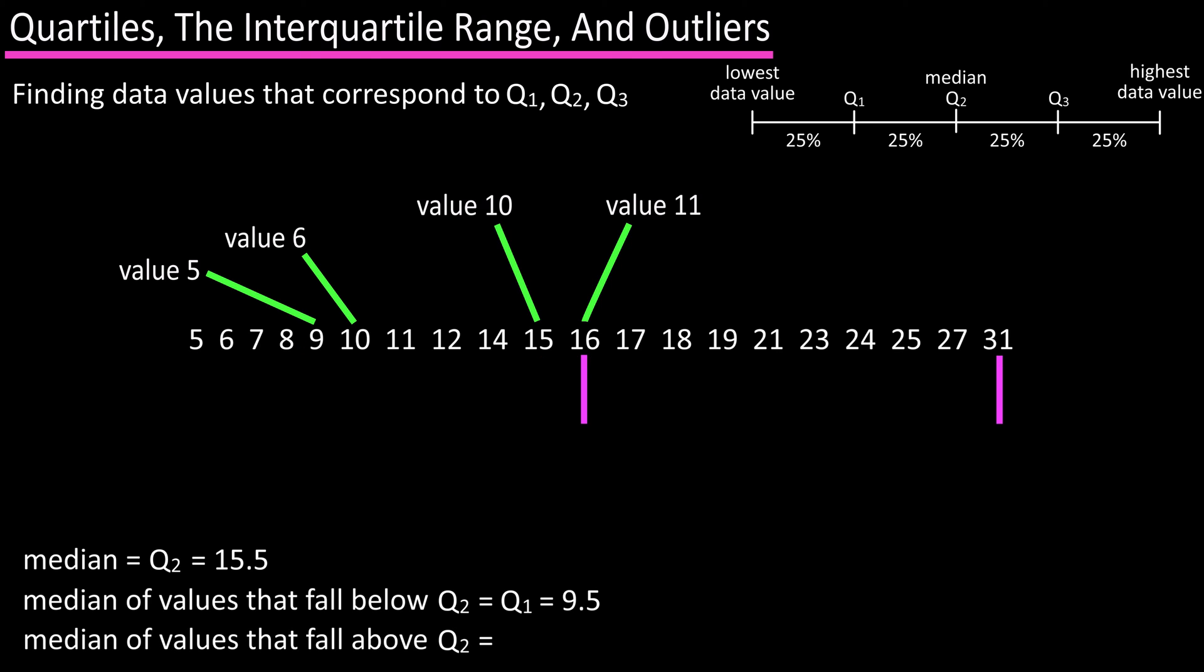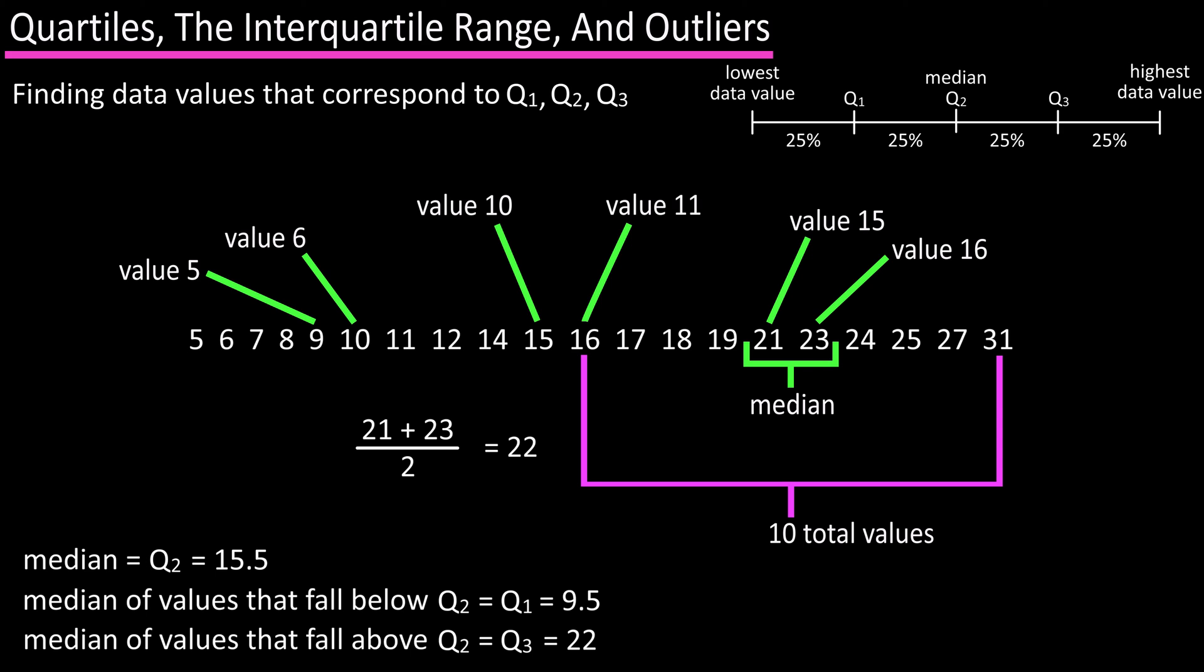Next, we want to find the median values that fall above Q2, which will be the value of Q3. We have an even number of values in this section of the data set, 10, so the median will be between the two middle values, value number 15 and value number 16, which are 21 and 23. Add them together and divide by 2 and we get 22, which is the value of Q3.